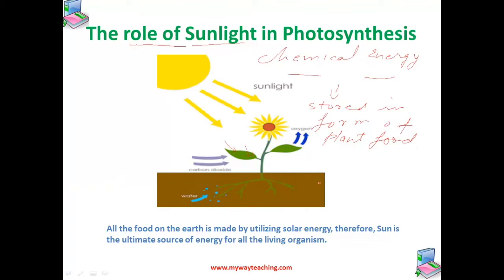So, when plants utilize food made by photosynthesis, they actually use the solar energy stored in it in the form of chemical energy.